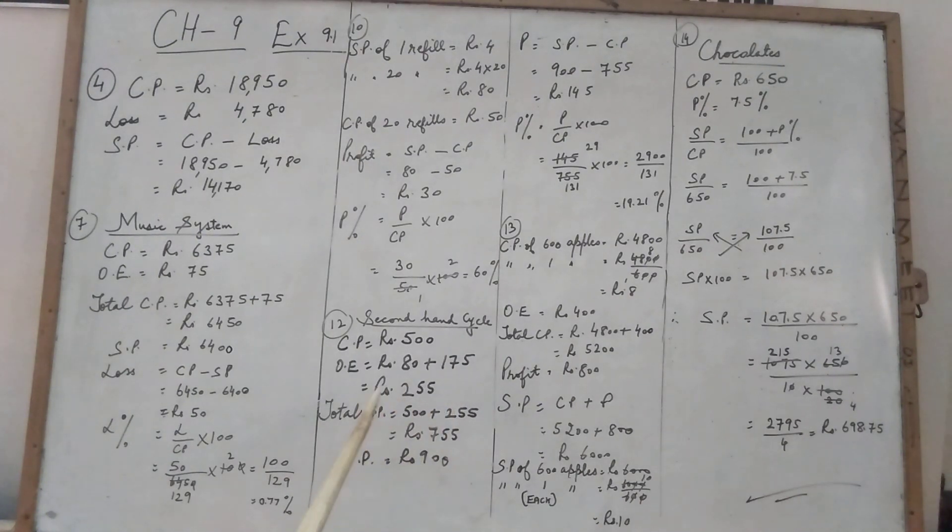The question is regarding second hand cycle. Cost price is Rs. 500, overhead expenses, add up both expenses. Rs. 80 repairing and Rs. 175 repainting. When we add these two we got Rs. 255. So total CP will be Rs. 500 plus Rs. 255, it will be Rs. 755. Now that he sold again to John for Rs. 900. Selling price is Rs. 900.